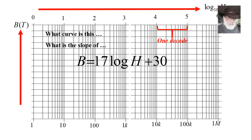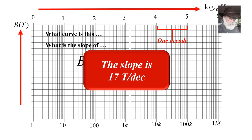You say, hmm, the slope is 17. 17, what are the units of that slope? The units would be 17 Teslas per decade. That is the slope. 17 Teslas per decade. Every time we advance one decade to the right on the horizontal axis of H, the flux density goes up by 17 Teslas. And there is that.